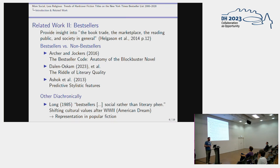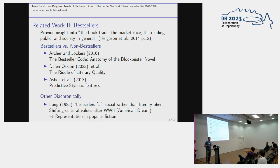There is Archer and Jockers' book on the bestseller code. Karina Ferdalan-Oskam just wrote a book on the riddle of literary quality. There's also an article from Ashok et al. that tried to predict the success of novels based on grammatical and stylistic features. We also found a diachronic study on a fairly small dataset, mostly qualitative by a sociologist, who claims bestsellers are a social rather than a literary phenomenon. She looked at shifting cultural values — for example, the American dream in the 1950s, consumerization and American affluence — finding their representation in popular fiction.